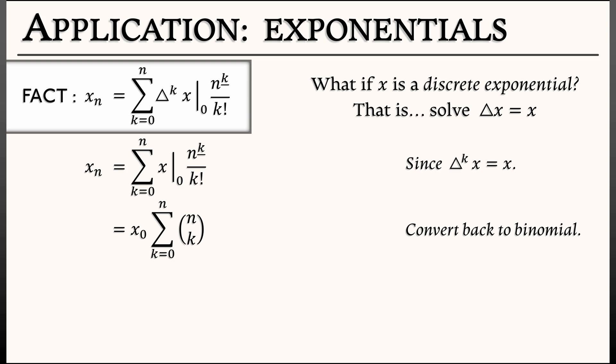And what we get when we convert those falling powers back to binomial notation is x0 times the sum k goes from 0 to n of n choose k. Now, what are we going to do with that? How do we sum those up? We're going to reverse engineer the binomial theorem. What we're going to do is take all of those terms under the sum and multiply by 1 to the n minus k times 1 to the k. We're running the binomial theorem in reverse because applying that gives us a final answer of x0 times quantity 1 plus 1 to the n. That means x0 times 2 to the n.